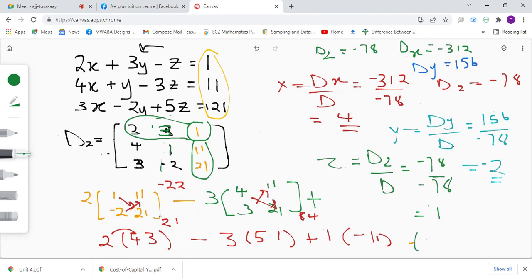So our answer, we're going to write it like this: x equals 4, y equals negative 2, z equals 1.